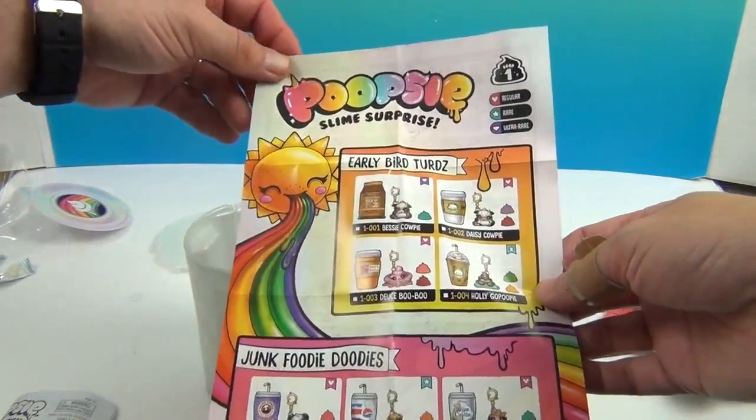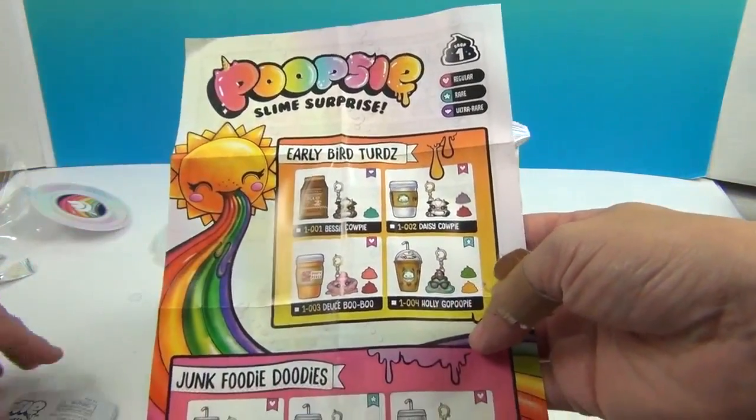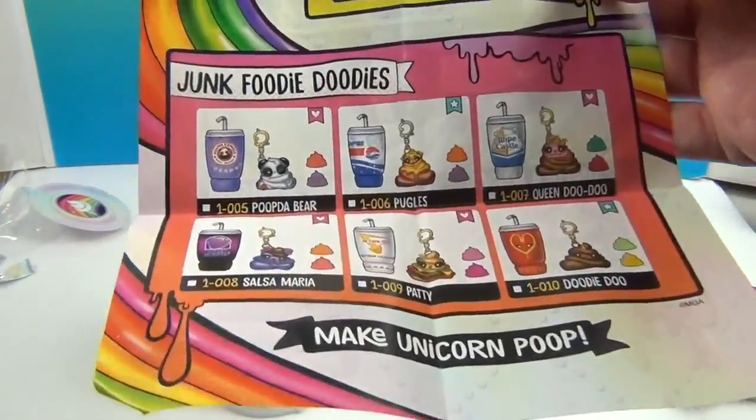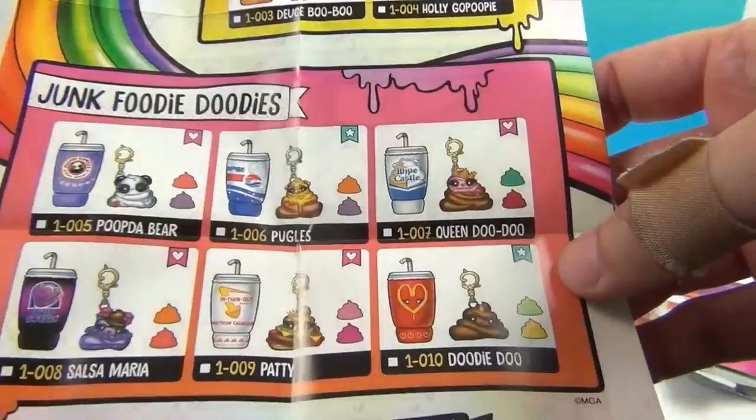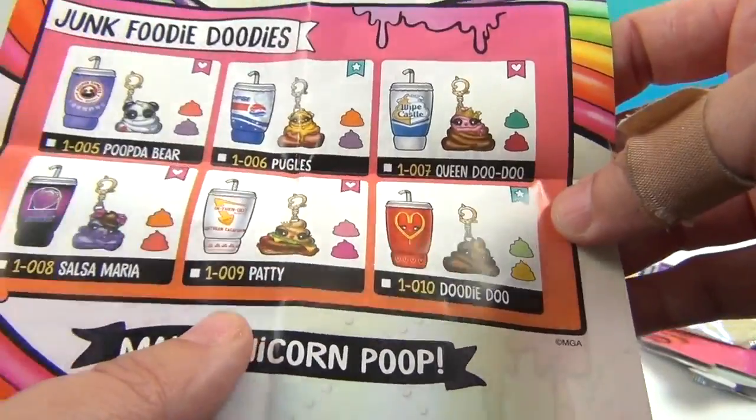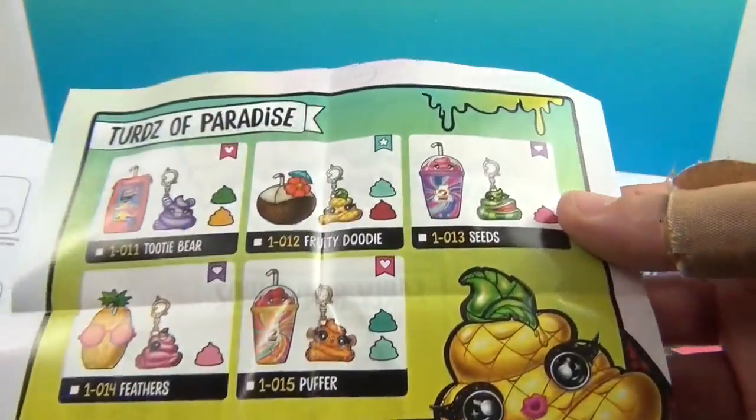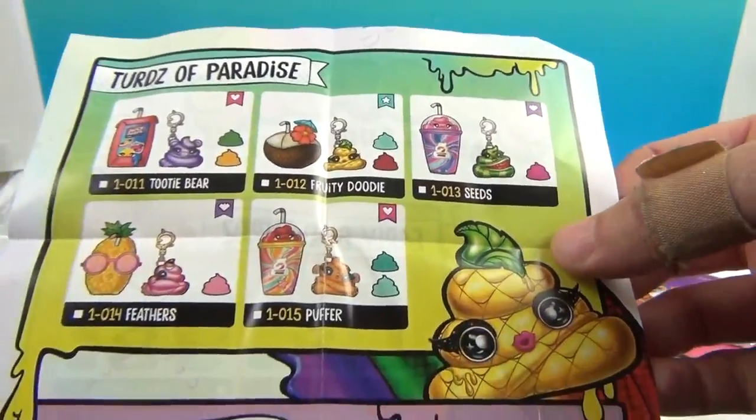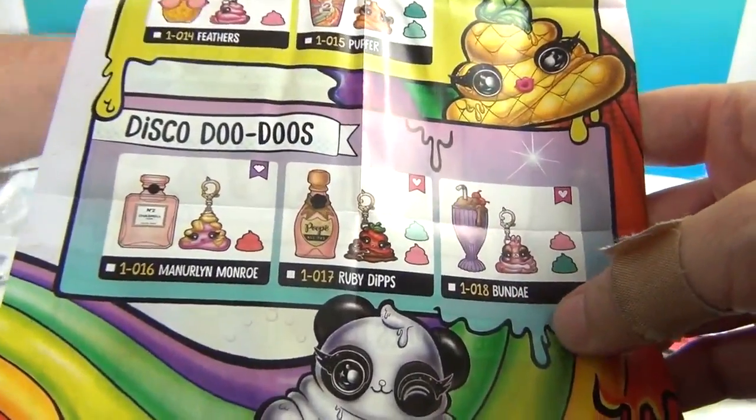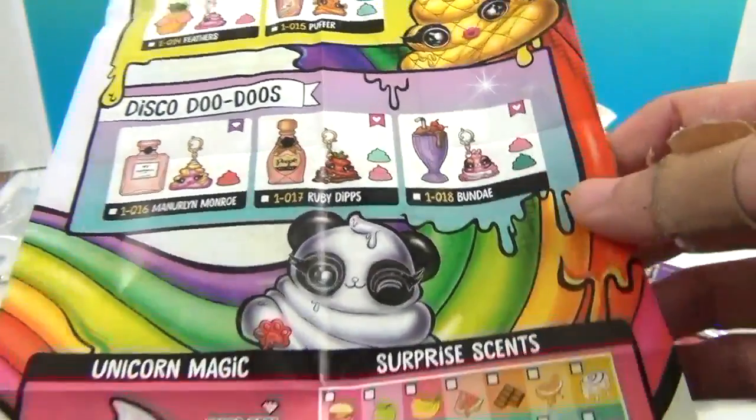You got that early bird turd. You got Junk food, ladies batadfish, Bessie cowpie and daisy cowpie and Douce boo-boo. Holy. Go poopy. Holly go poopy. Okay. But. Poop de bear. Puggles. Queen doo doo. Salsa Maria. And. We're so going to get flagged by YouTube. Chance. Yeah. And. Patty. And doodiedoo. And on this side, you got tutti bear. Turrts of paradise. Fruity Doody, Seeds, Feathers, and Puffer. Oh, I want the little Slurpee Cup.